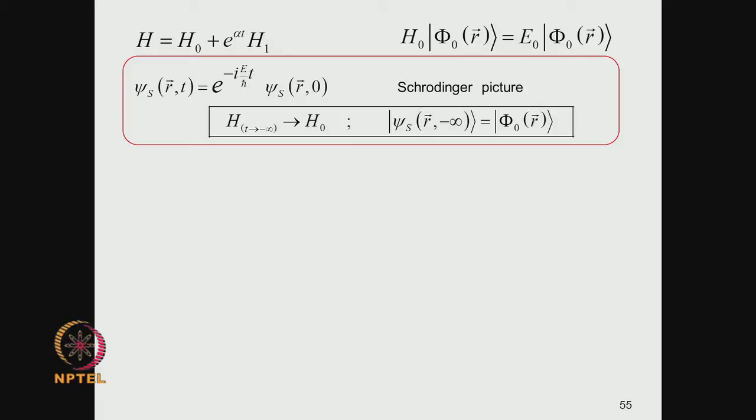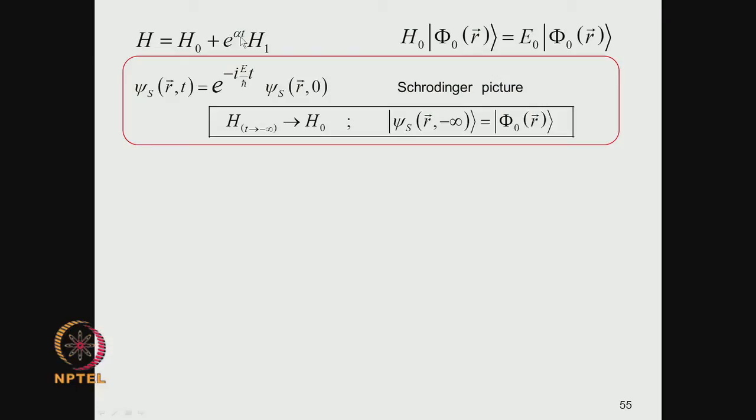Like in the many electron system, the first order perturbation theory gives you the same result as Hartree-Fock, but second order and higher order perturbation theory does not converge. So this is the unfriendly part. We scale this unfriendly part by the term e^(alpha*t). When alpha equals 0, you have e to the power 0, which is 1, and you have the full Hamiltonian.